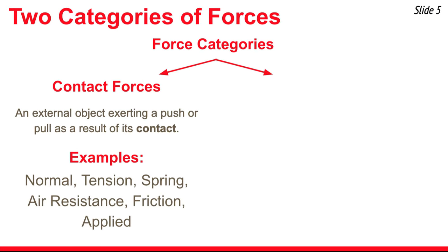Let's begin by talking about contact force interactions — that's when the object in question is touching another object in its surroundings, and as a result of that contact, there's a push or pull. There are six types of these forces: normal force, tension, spring, air resistance, friction, and applied. We'll talk about these individually as we go through this presentation.